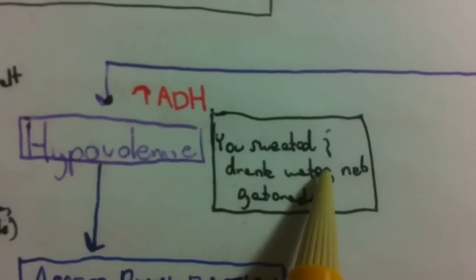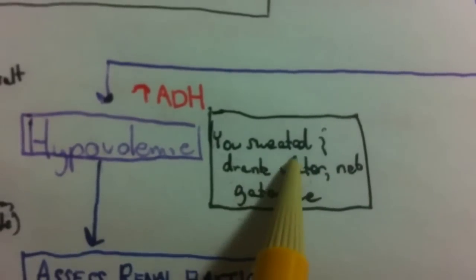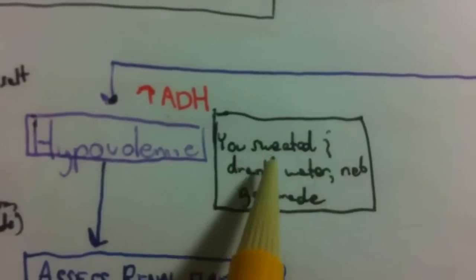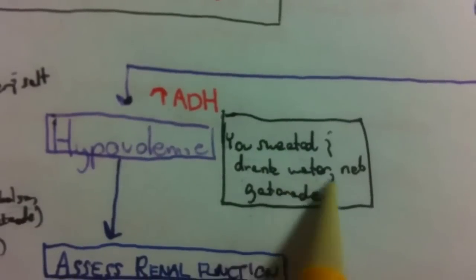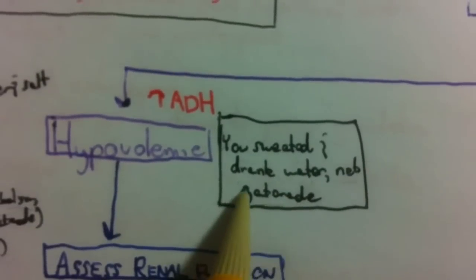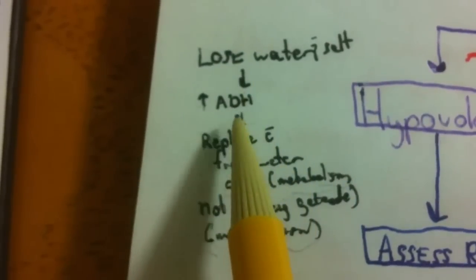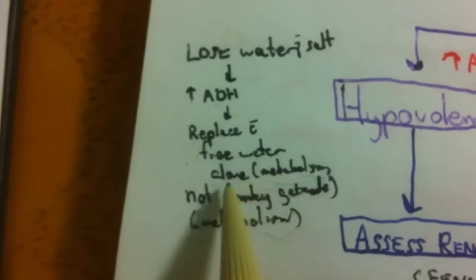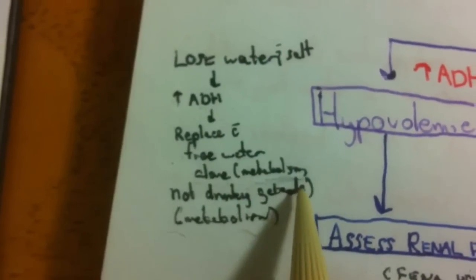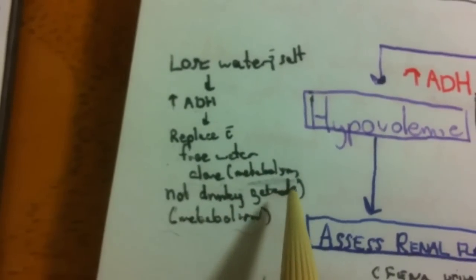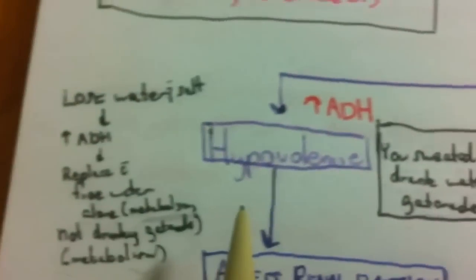Basically what happened was: you sweated and drank water — not Gatorade — or you somehow lost your salt water, your 'chicken noodle soup,' from your blood vessels, and instead of replacing it with more chicken noodle soup or Gatorade, you replaced it with free water. ADH got turned on and replaced it with free water. Your metabolism is also constantly generating free water through biochemical reactions, which contributes to this problem as well.